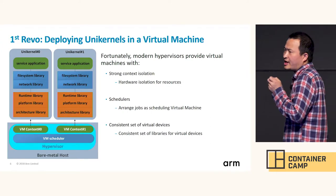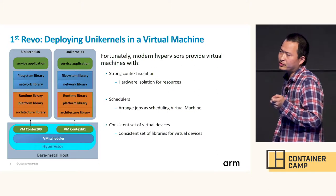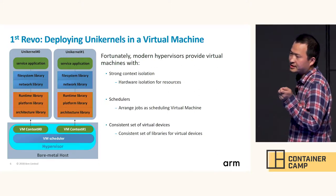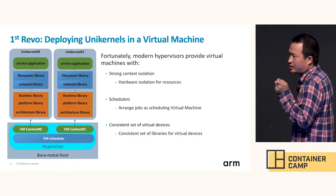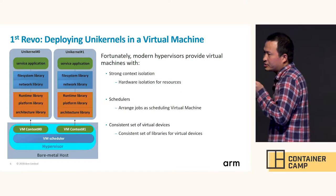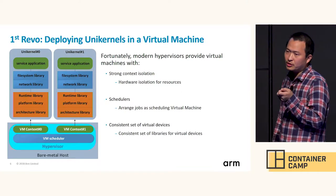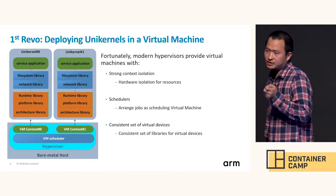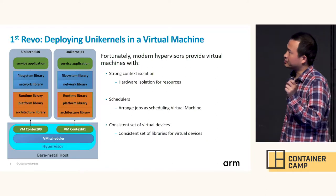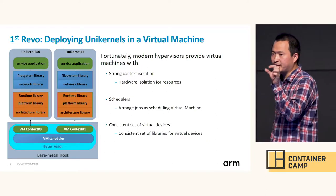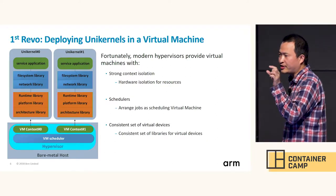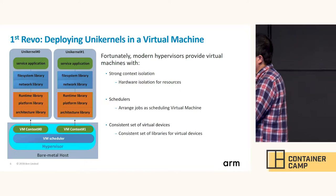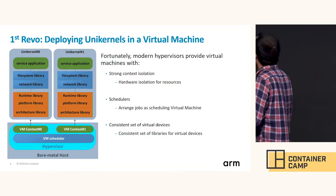Hardware isolation for resources is a key feature of virtual machines. Resource isolation between UniKernels can be achieved at low cost simply by using a hypervisor to create a fresh virtual machine for each distinct UniKernel.